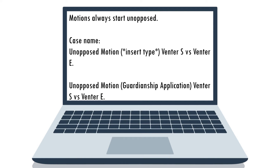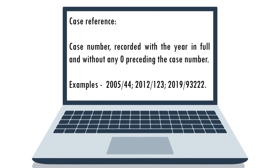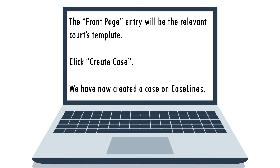When inserting the case name, you must first indicate what type of matter your case is, and then insert the party's details. As our matter at present is unopposed — essentially all applications are unopposed until formal opposing papers are received — the case name will look as follows: Unopposed Motion, then in brackets the type, then the party names. Let's pretend our application is for the appointment of the applicant as a minor child's guardian, so in the brackets type 'Guardianship Application.' Remember to also enter the case reference — the case number recorded with the year in full and without any zero preceding the case number, for example 2005-44, 2012-123, 2019-93222, et cetera.